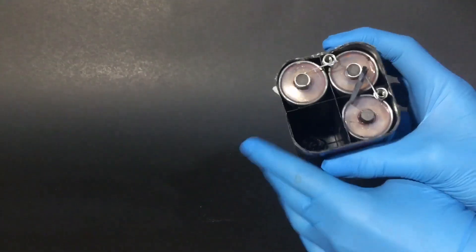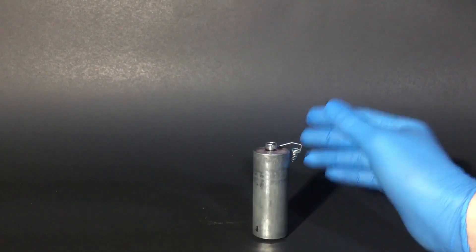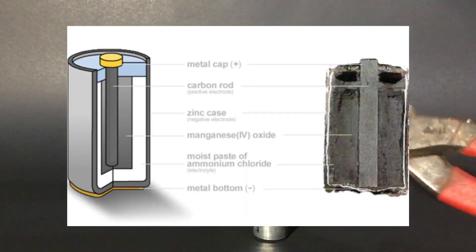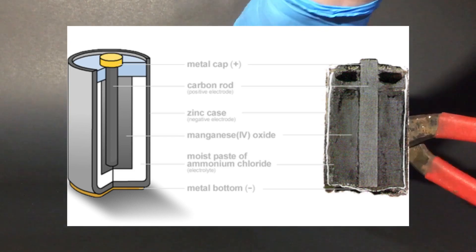The first step to getting this is taking apart a battery. I'm using a 6-volt battery because they have four dry cells which are pretty big. The battery is made of a zinc shell filled with manganese dioxide and a rod of graphite in the center.